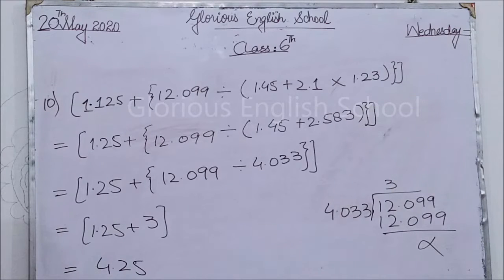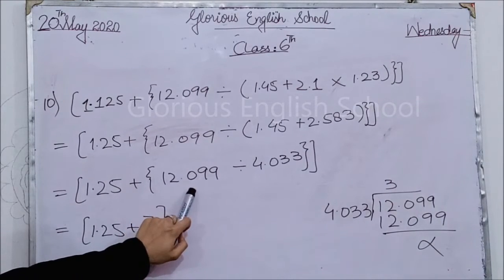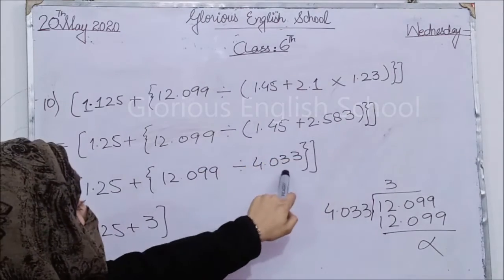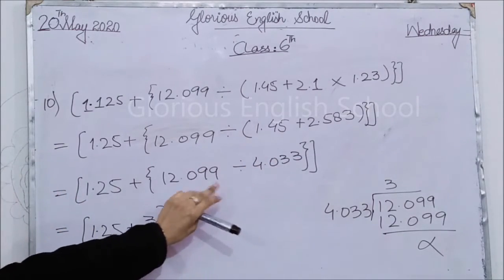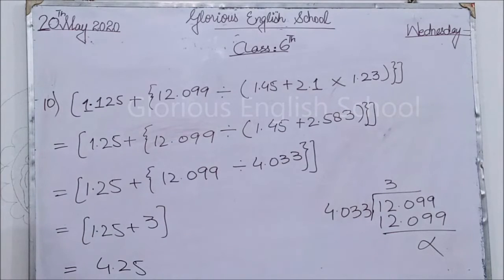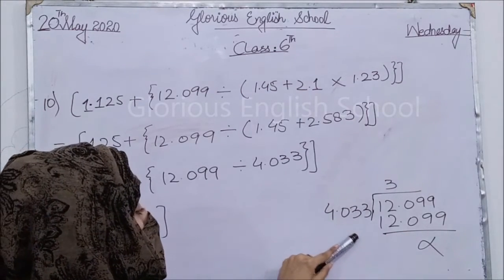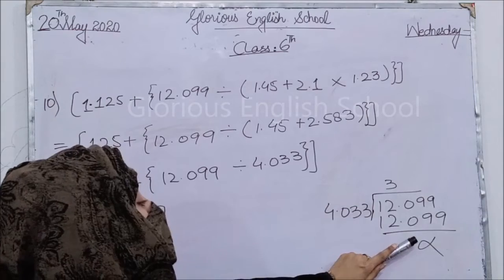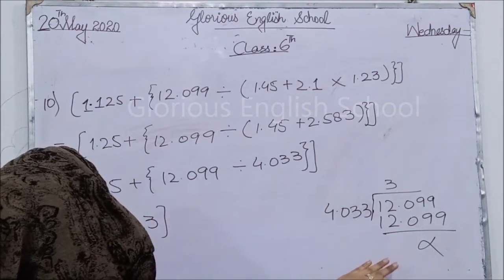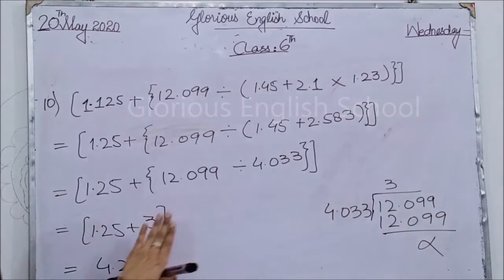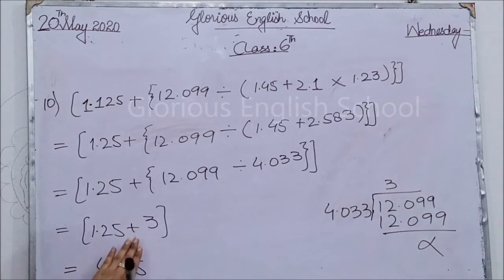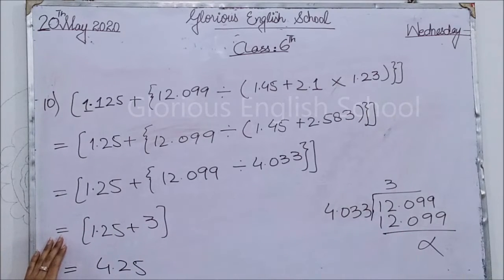Ab curly bracket ko solve karenge. Curly bracket mein 12.099 divide ka sign aur 4.033 plus ka sign hai. 4.033 ko 3 se multiply karenge toh exact value aa jaayegi aur zero aa jaayega. Curly bracket khatam ho chuki hai. Aap 1.25 ko 3 mein plus kar dena hai, toh 4.25 aa jaayega.